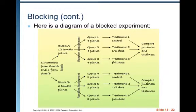Here is a diagram of a blocked experiment. In the book they discuss 12 tomatoes from store A and 6 from store B. They think that the store the tomato comes from might affect its juiciness and tastiness, so they separate the tomatoes based on their store of origin. Notice there's no random assignment when splitting into blocks — the tomatoes came with that characteristic. 12 tomatoes came from store A and 6 from store B.